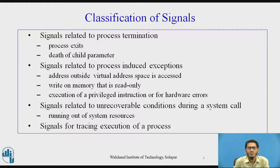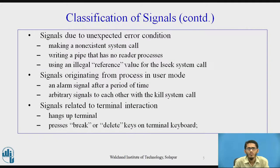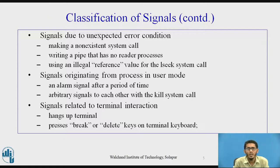The next category is signals for tracing the execution of a process. There are also signals that arise due to unexpected error conditions, such as making a non-existent system call, writing to a pipe that has no reader process, or using an illegal reference value for the LSEC system call.